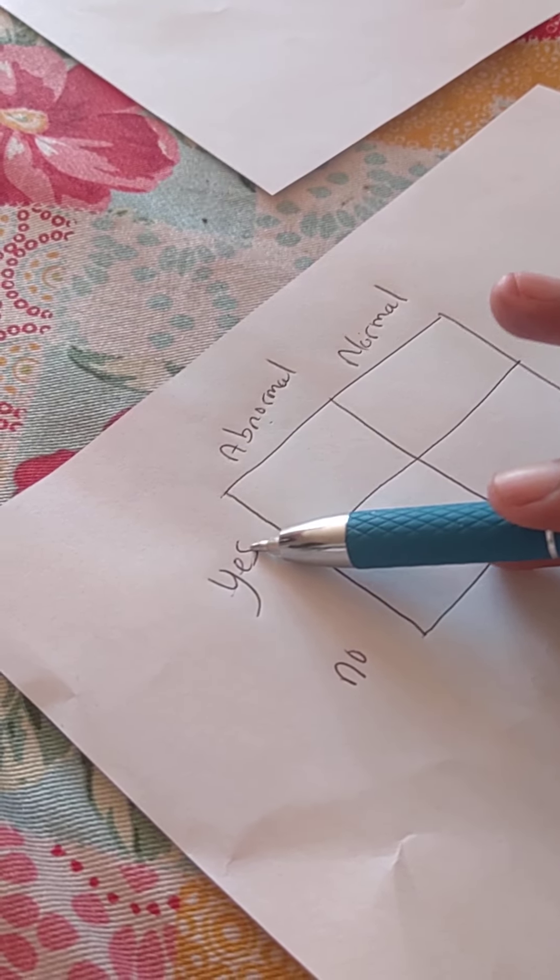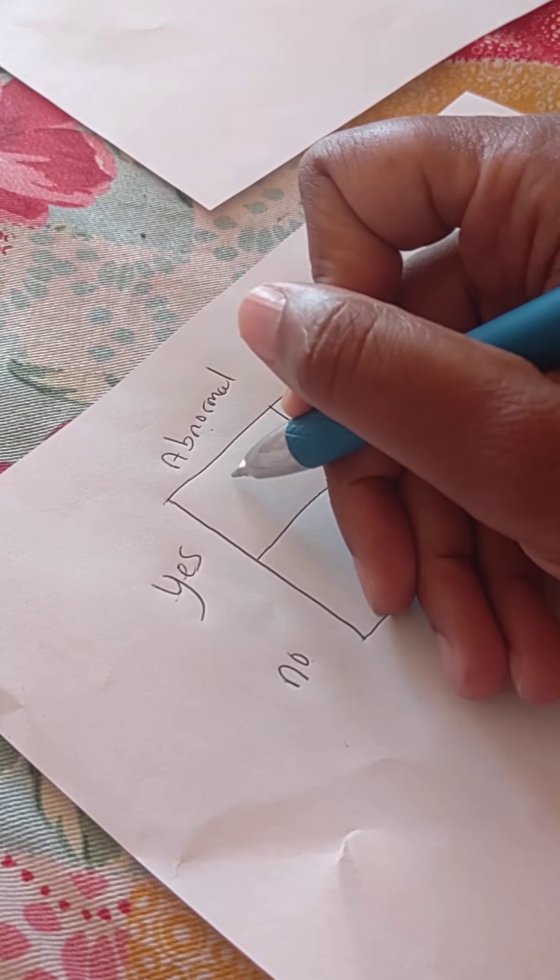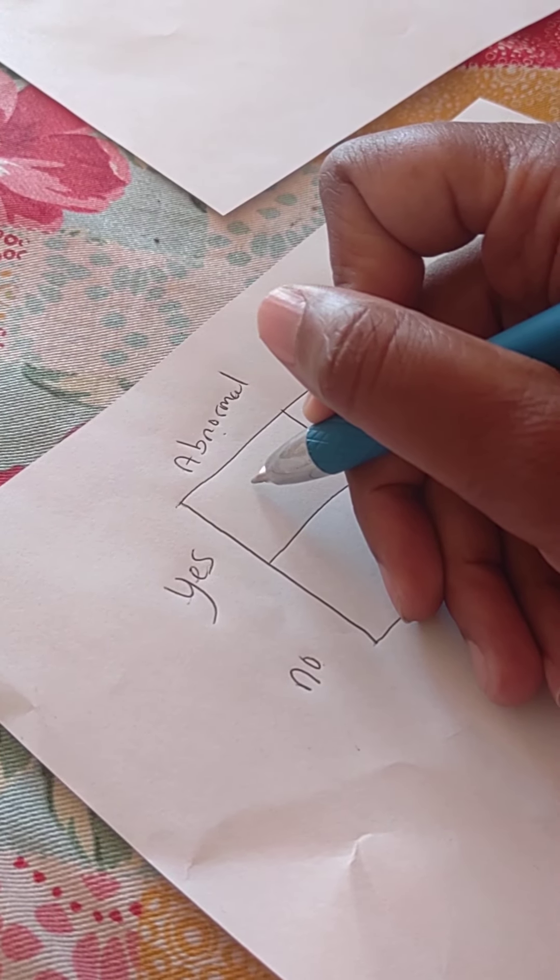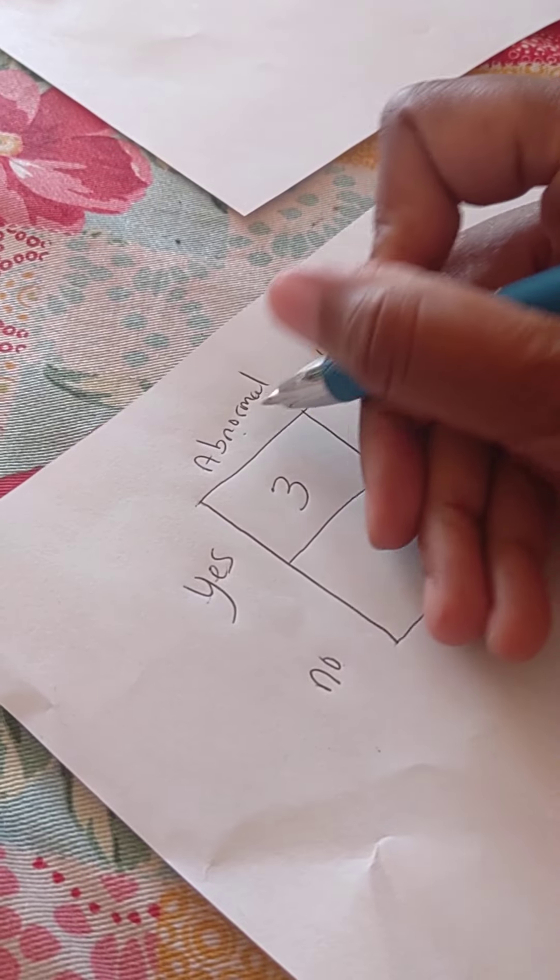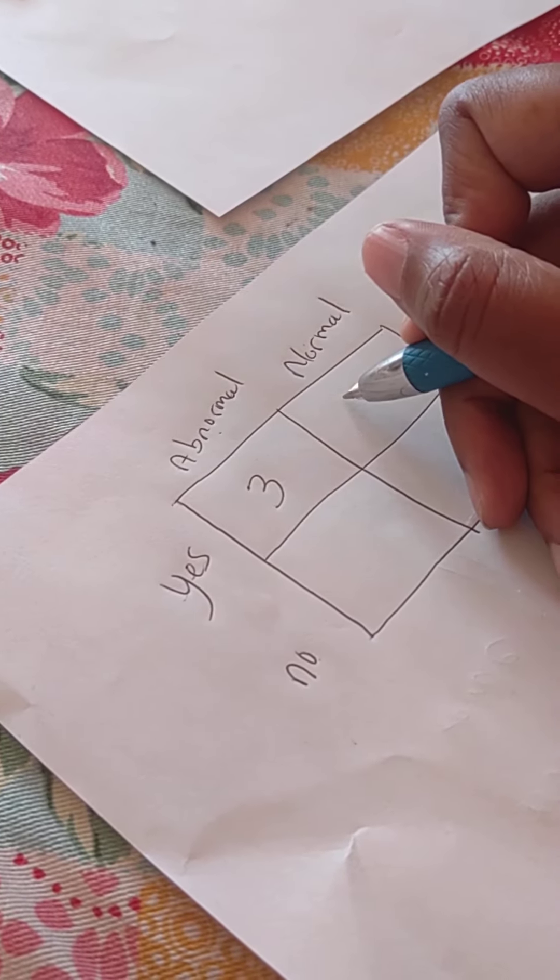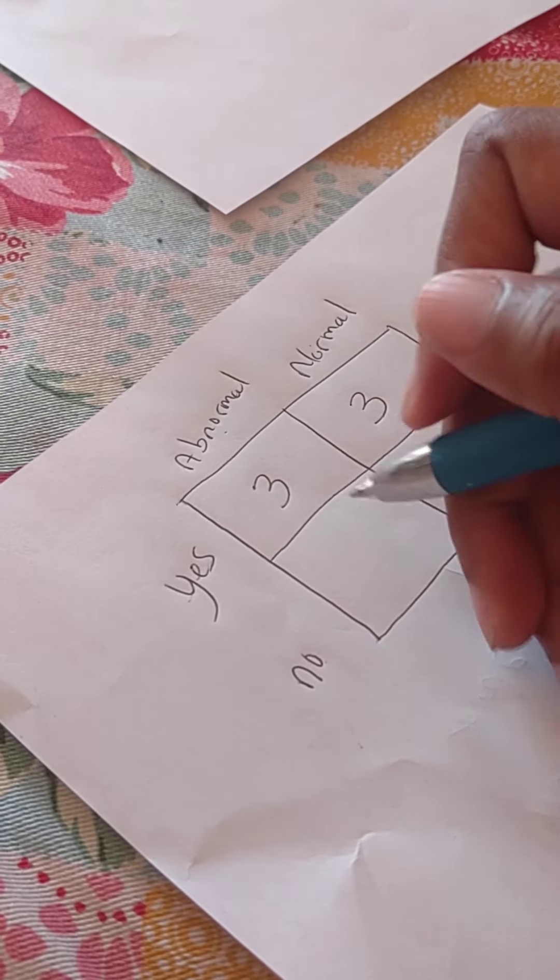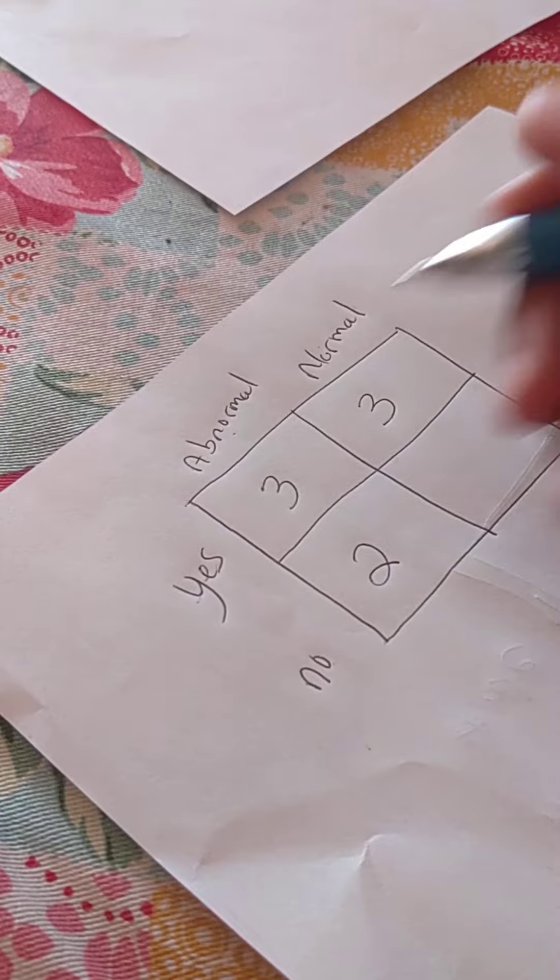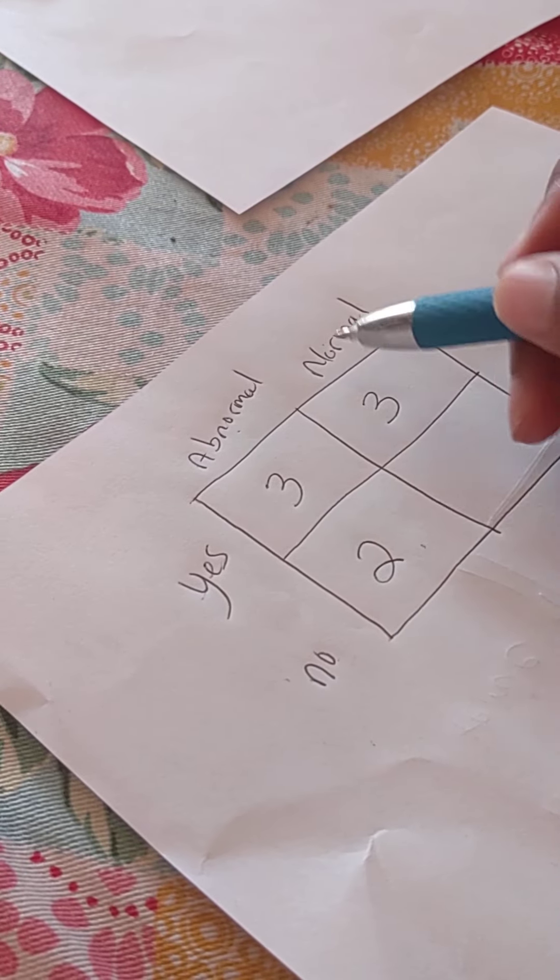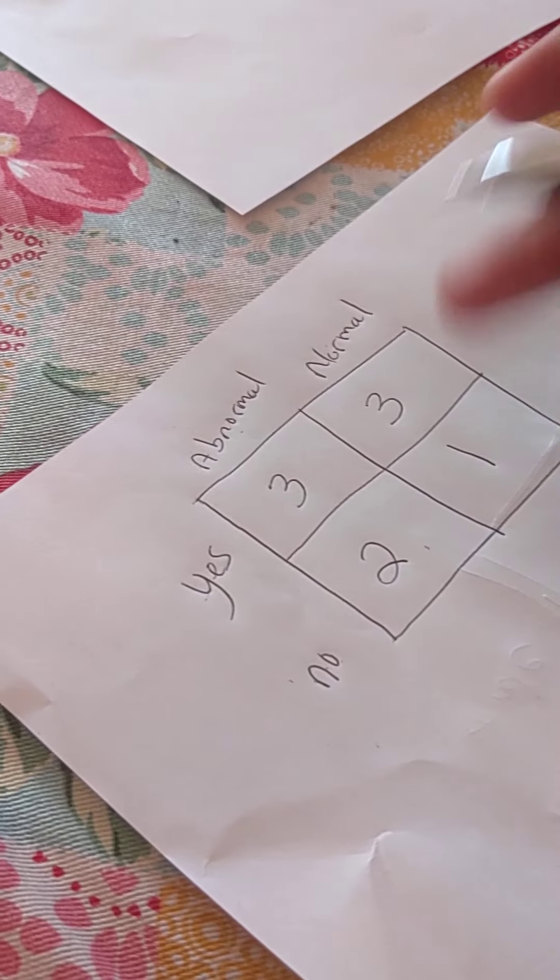So, yes, the person is a smoker. No, they're not a smoker. Okay. So, let's put some numbers in this table. Say we observed three cases of a yes and an abnormal, three cases of a normal and a yes, two cases of an abnormal and a no, and one case of a normal and a no.